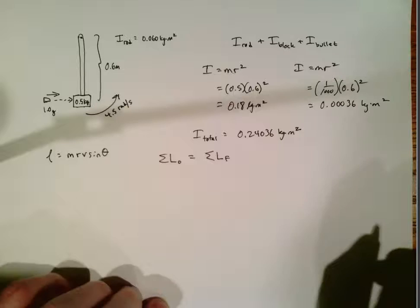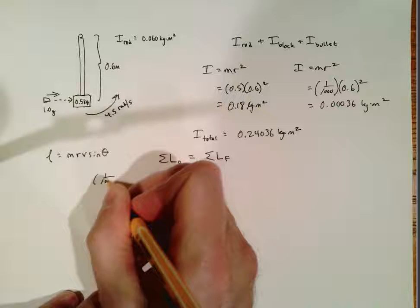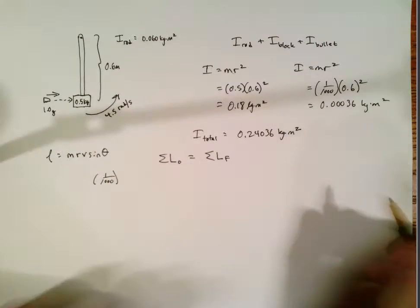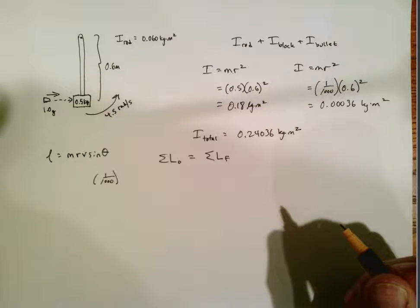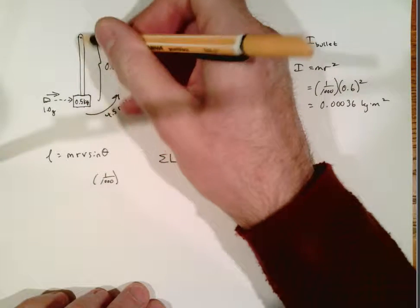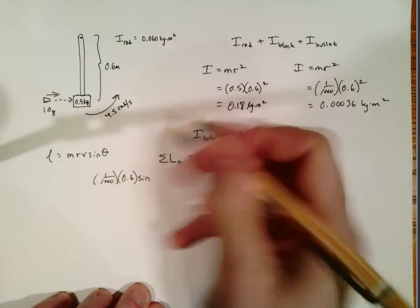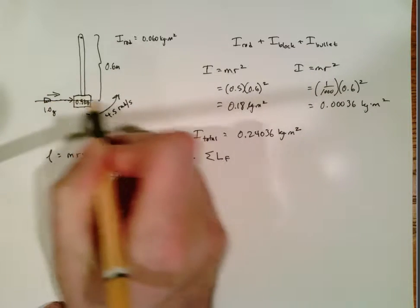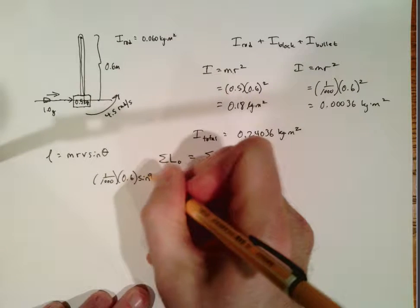So that's what we're going to use for the bullet. So the mass of the bullet, again in kilograms, is one one thousandth. r is how far away the bullet is from the axis of rotation at the point of impact. So that's here and so that distance is 0.6. Now sine of theta, the angle that we're talking about, is the angle between the velocity vector and the radius and that is a 90 degree angle sine of 90.